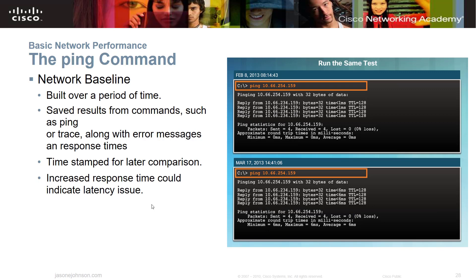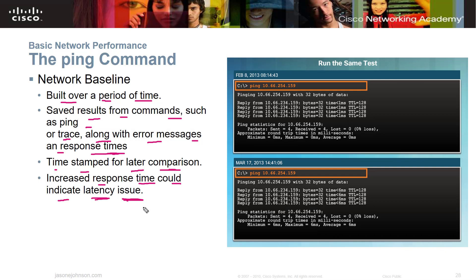When you set a network baseline, it's where you try to establish what's normal for the system. We build a baseline over a period of time by running a series of pings and asking: what's normal during different times of day? What's an average ping time? What's an average reply? You save those results — ping or trace output, error messages, and response times — and you can go back and analyze them later. You also timestamp results for later comparison, since increased response time could indicate a latency issue.